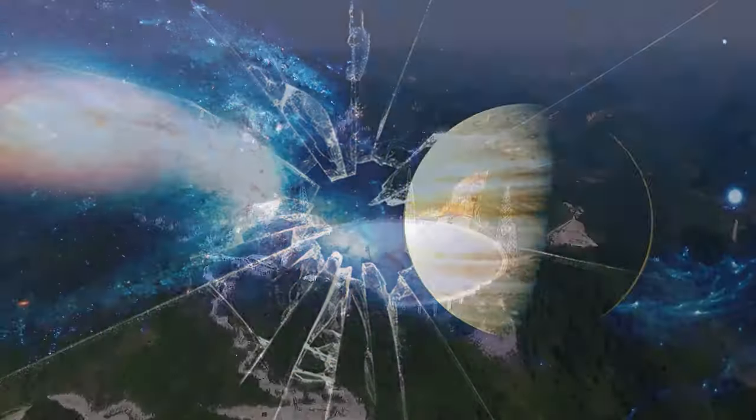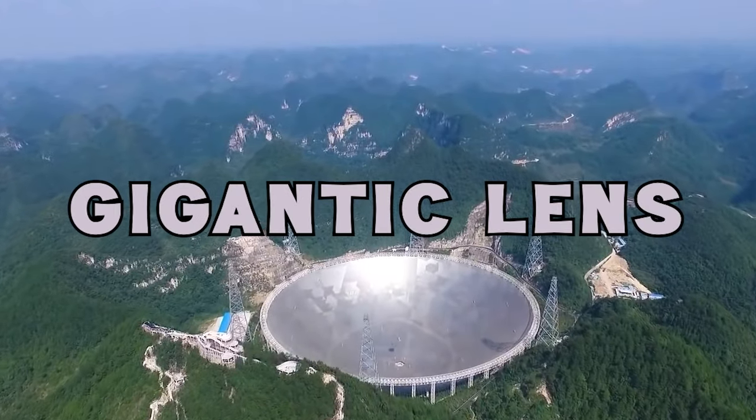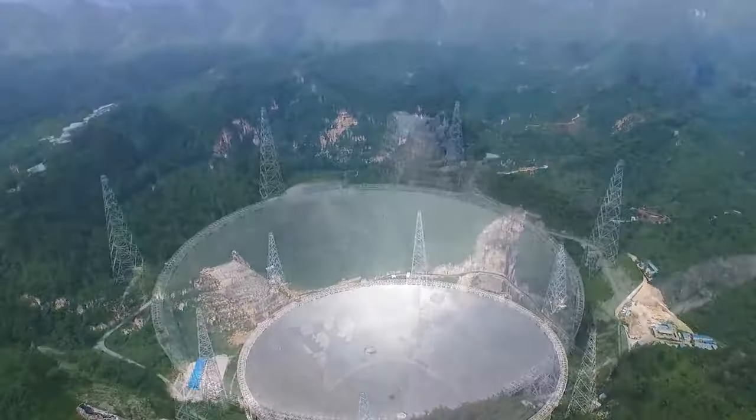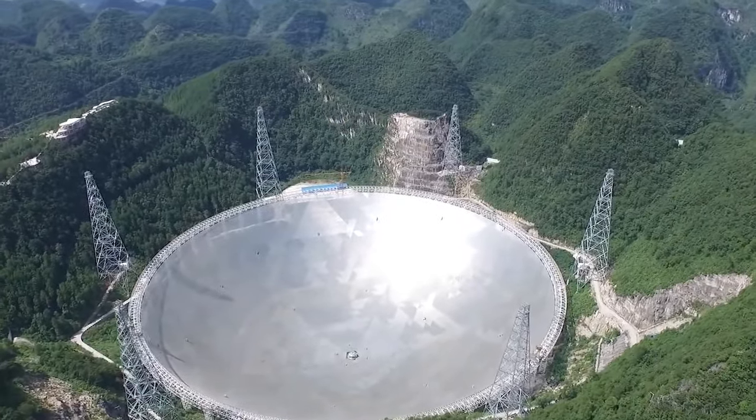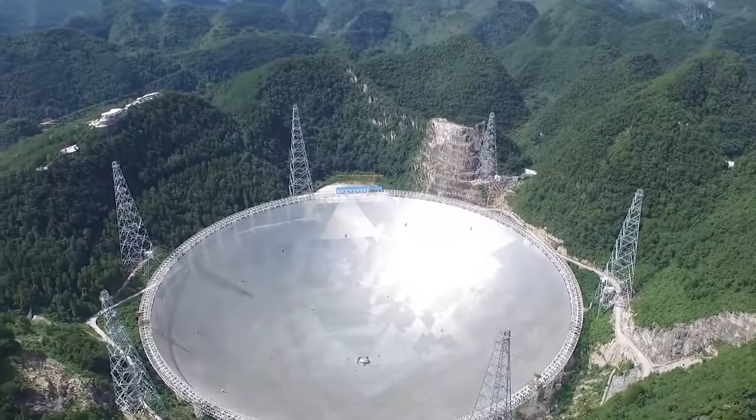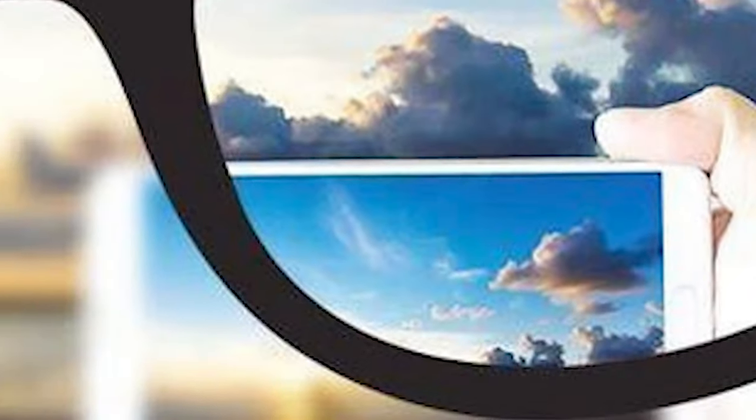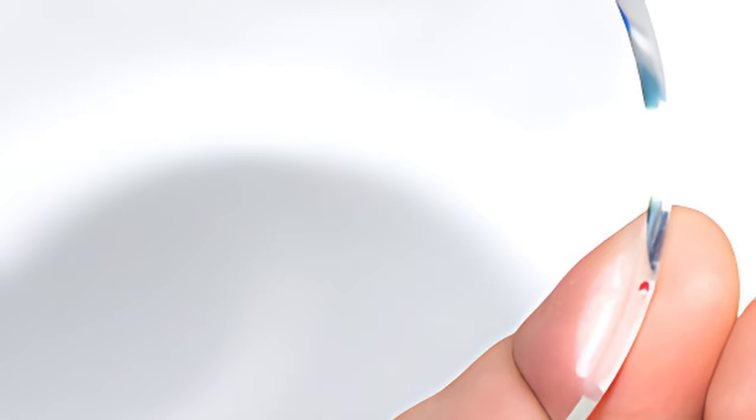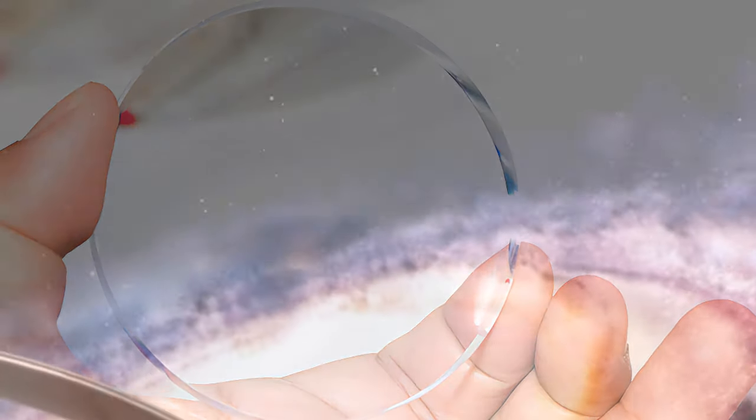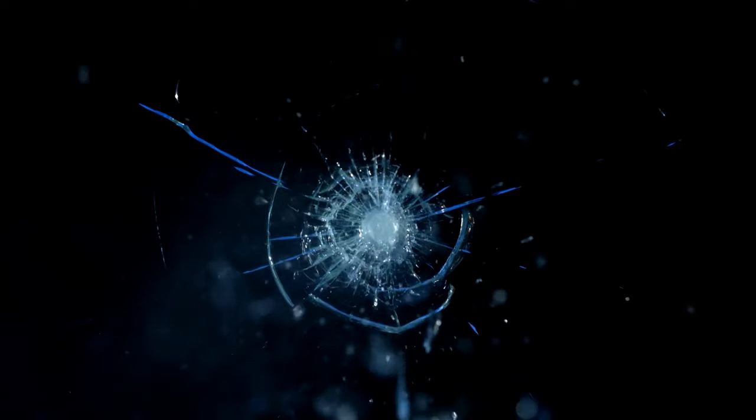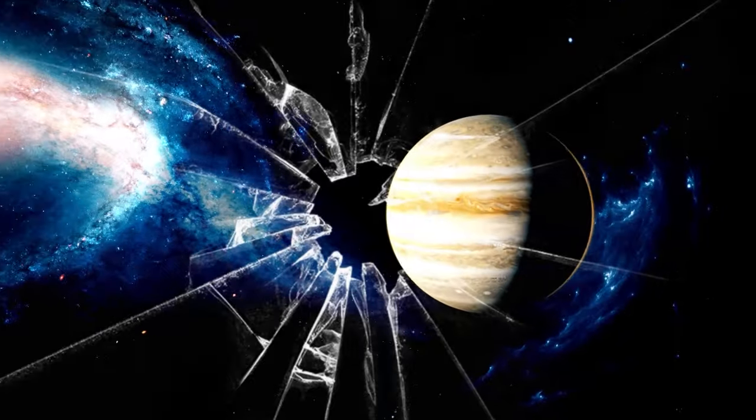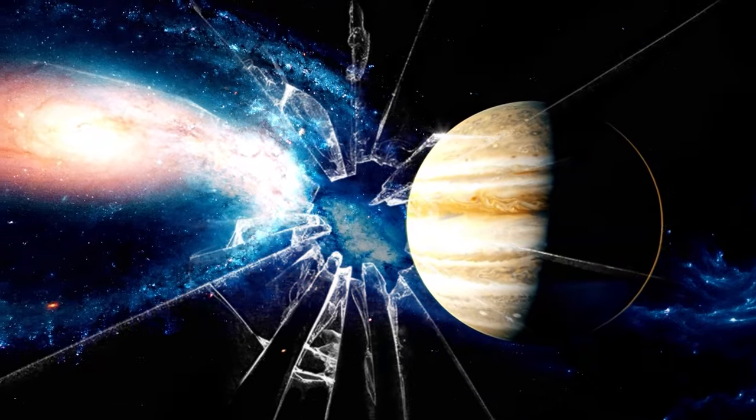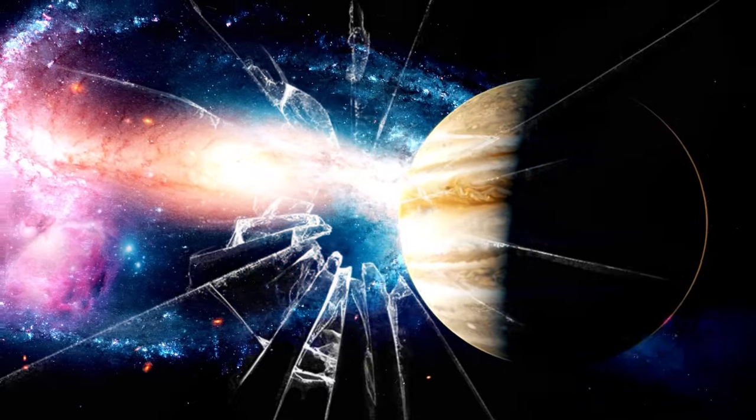But there's a catch. Imagine a gigantic lens, much larger and thicker than a standard magnifying glass. While such a lens has the potential to gather even more light, it comes with its own set of challenges. The sheer size and weight of the lens can make it unwieldy and difficult to work with. Ensuring that the surface of the lens is perfectly smooth becomes a daunting task. Any imperfections or irregularities on the lens can distort the image, much like looking at your reflection in a window with smudges or scratches. For stargazers seeking clarity and precision, these imperfections are a significant roadblock.